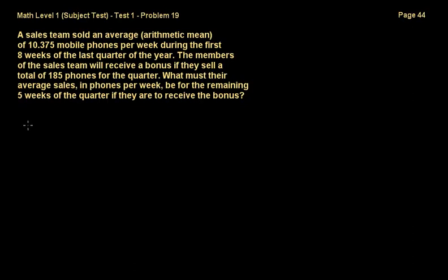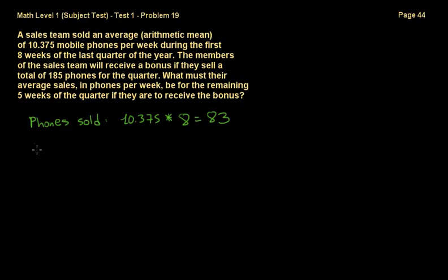Let's see how many phones they've sold already. If they're selling an average of 10.375 for 8 weeks, that's 10.375 times 8, which gives us the total number of phones already sold — and that is 83. Now, phones to sell in order to get the bonus: they have to sell 185 total, but they've already sold 83.